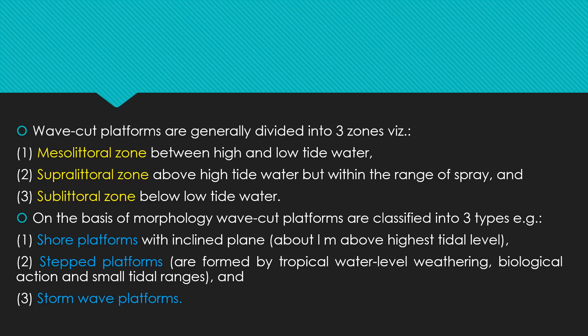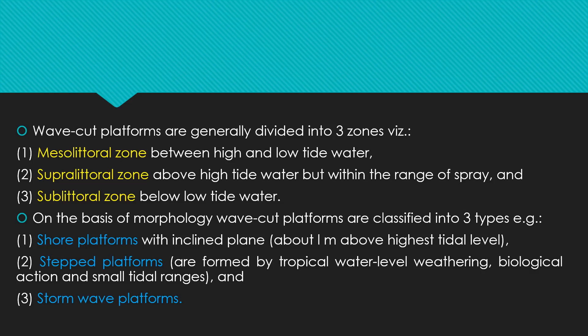Storm wave platforms are influenced by storm waves, unlike other platform types. Sea caves, also referred to as CKs, are formed along the coast due to the gradual erosion of weak and strongly jointed rocks by the pressing force of breaking waves. The joints are widened into large cavities and hollows, which are further enlarged by gradual wave erosion into well-developed coastal caves.